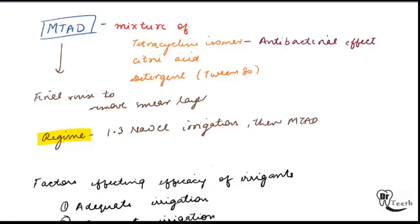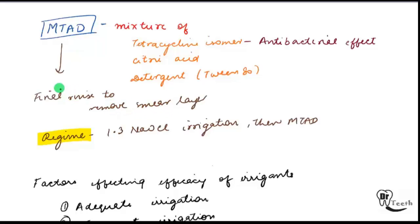The next irrigant is MTAD — a mixture of tetracycline isomer, citric acid, and a detergent (Tween 80). The tetracycline isomer provides the antibacterial effect. MTAD is used as a final rinse to remove the smear layer. The regime is: first do 1.3% NaOCl irrigation, and then use the MTAD.